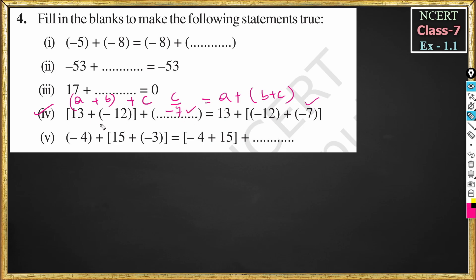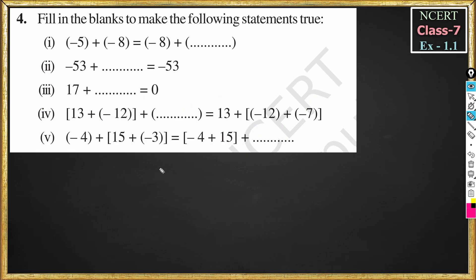To verify: 13 plus minus 12 is 13 minus 12, which equals 1, and 1 plus minus 7 equals minus 6. On the other side, 13 plus minus 12 plus minus 7 gives 13 minus 19, which also equals minus 6. Both sides match, confirming that minus 7 is the correct answer.